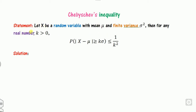The statement of the Chebyshev inequality is: for any random variable X having mean mu and finite variance — make sure the variance must be finite — then for any positive real number k, this inequality holds.